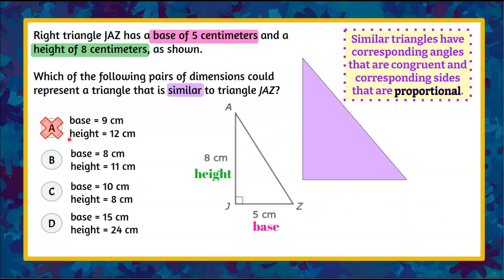All right let's move on, clear our workspace and look at B. So now we're going to go to a base of 8 centimeters from 5. We're going to increase to an 8 centimeter base and our height is going to go from 8 centimeters to 11 centimeters. Let's write our proportion. Our first ratio is 5 to 8. Our second ratio 8 to 11.